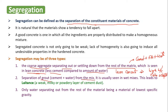The second type of segregation is separation of grout from the remaining mix. Grout is nothing but cement and water. In this second kind, the grout separates out from the fine and coarse aggregate. It is usually seen in wet mixes. This leads to laitance — a weak, milky, powdery layer of cement dust.